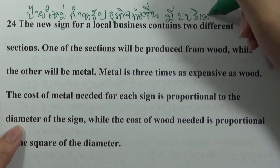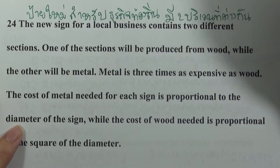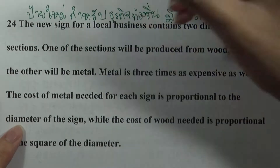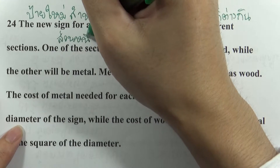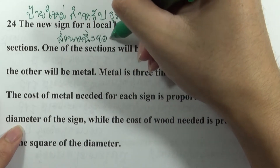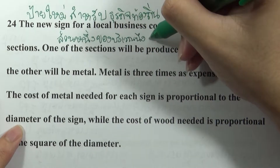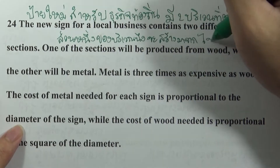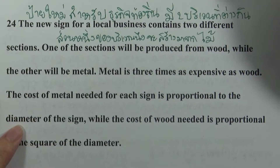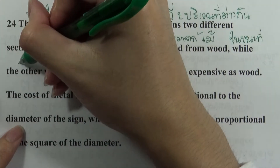ป้ายมีสองบริเวณที่ต่างกัน ส่วนหนึ่งของบริเวณหนึ่งจะสร้างมาจากไม้ ในขณะที่อีกส่วนหนึ่งจะเป็นเหล็ก (One section will be produced from wood, while the other will be metal.)